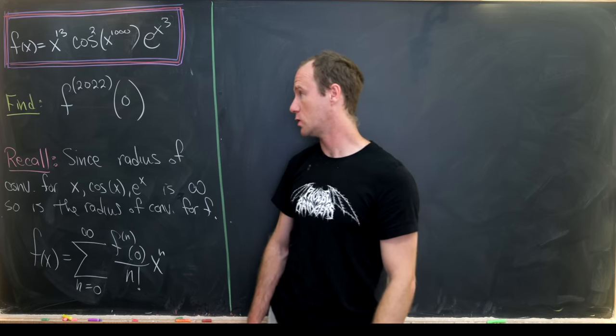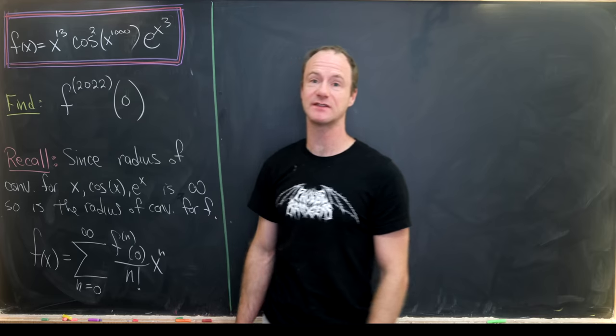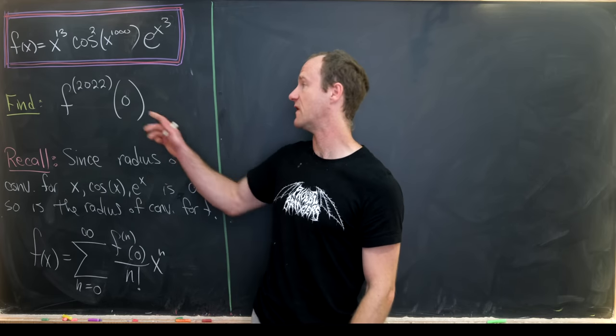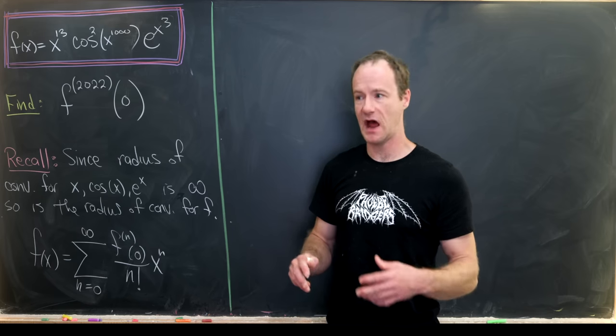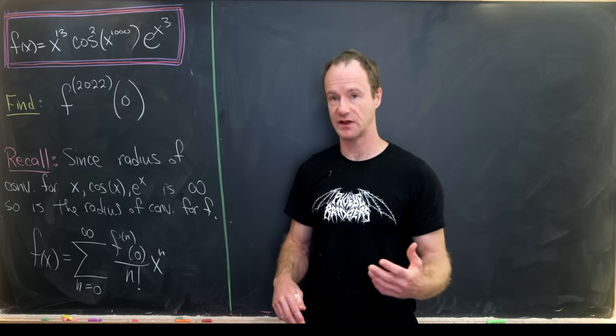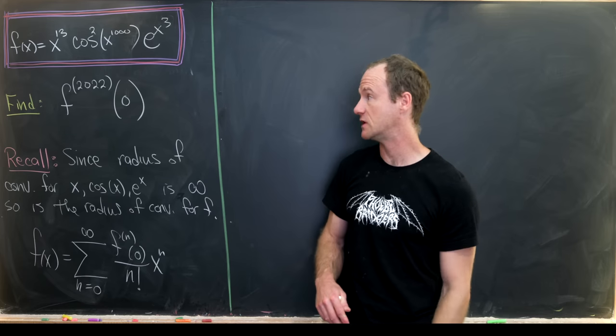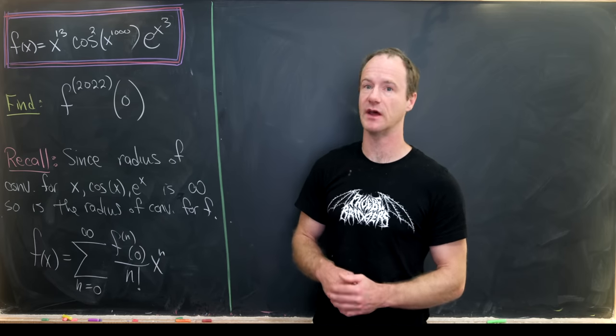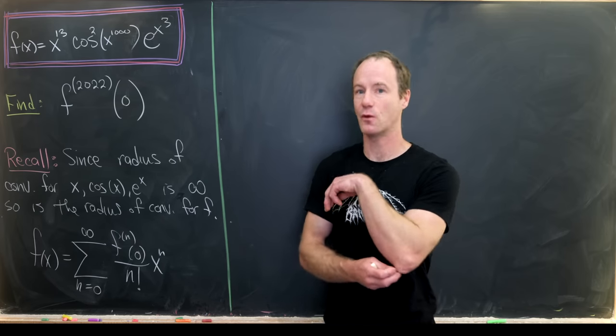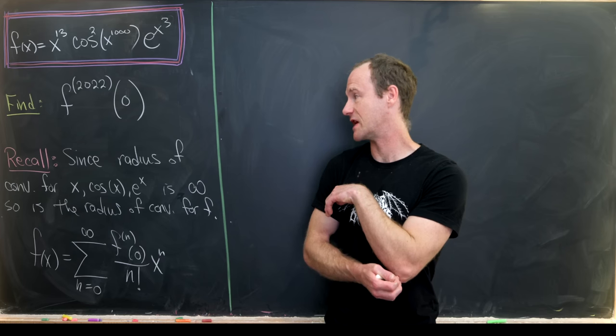And then our goal is to find the 2022nd derivative of this function evaluated at zero. So maybe you want to start right now and just take the first derivative and then the second derivative and the third derivative until you get to the 2022nd derivative and then plug in zero and see what you get. But of course that's not the way to do this problem. We must have a trick.